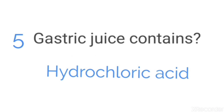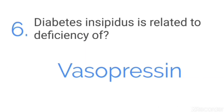Gastric juice contains hydrochloric acid. Diabetes insipidus is related to deficiency of vasopressin.